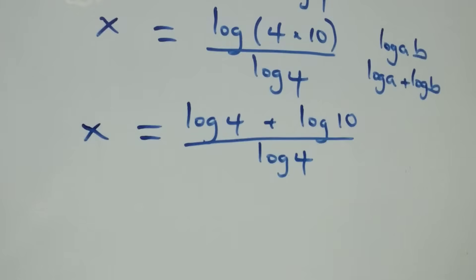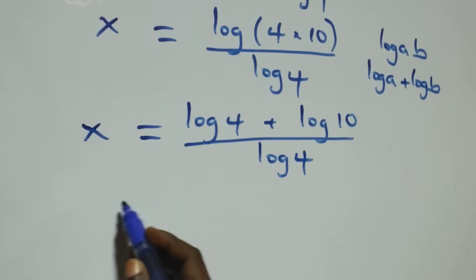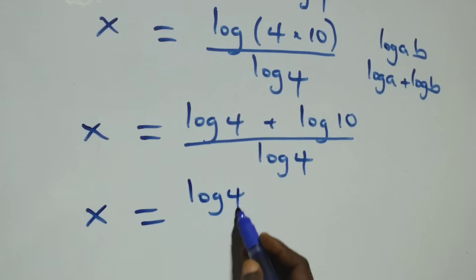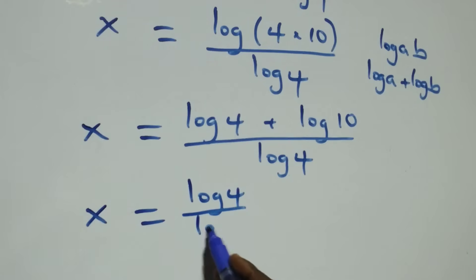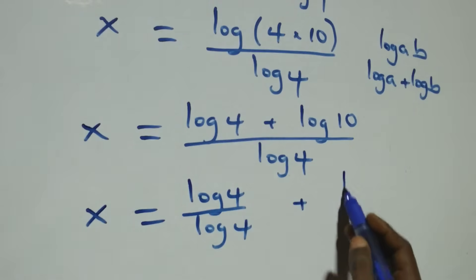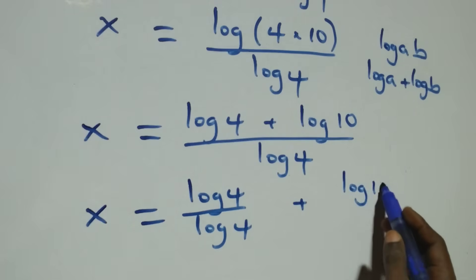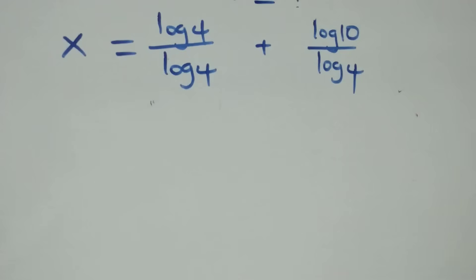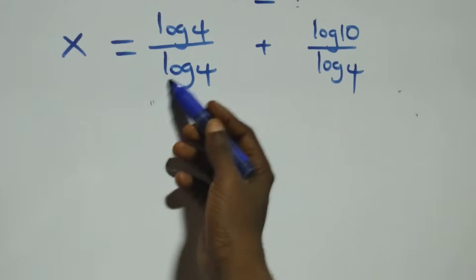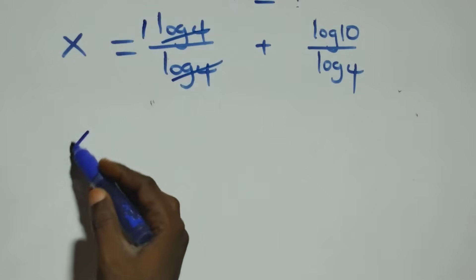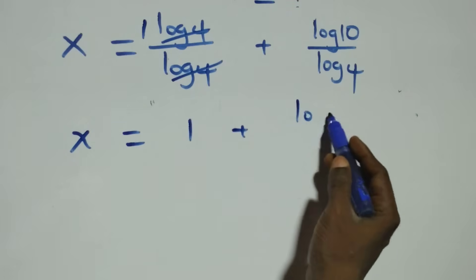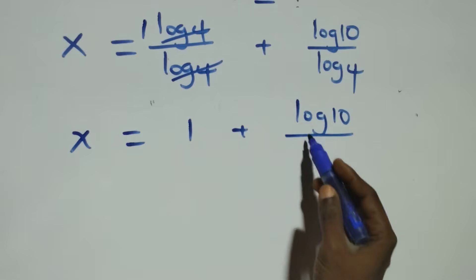We separate this into two fractions: x equals log 4 over log 4, plus log 10 over log 4. The log 4 terms cancel each other, leaving 1, so x equals 1 plus log 10 over log 4.